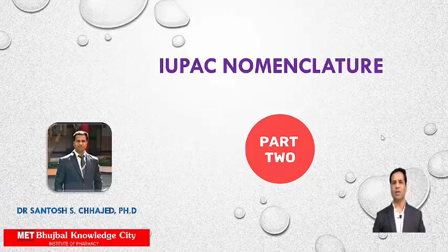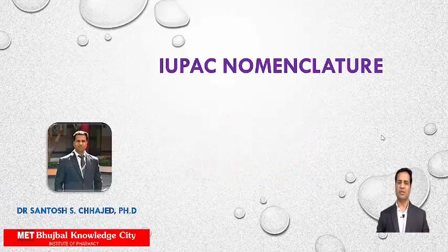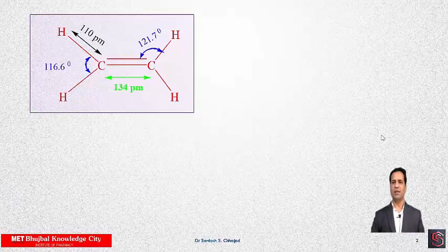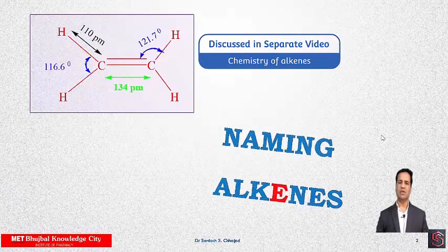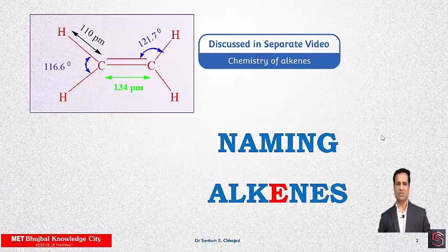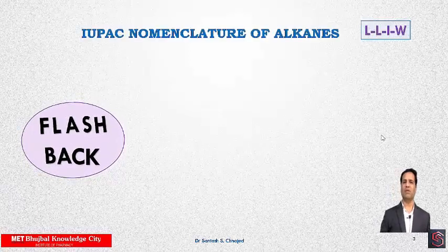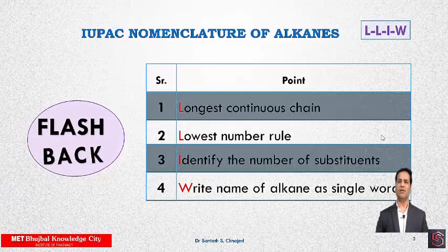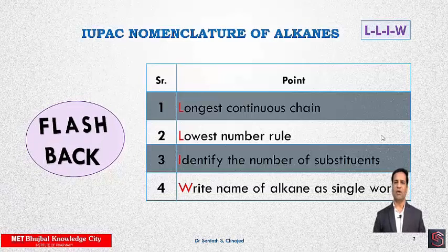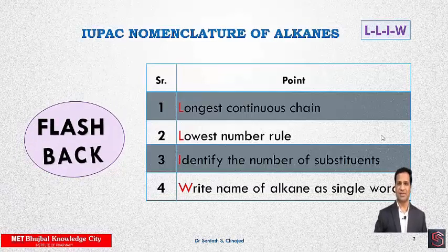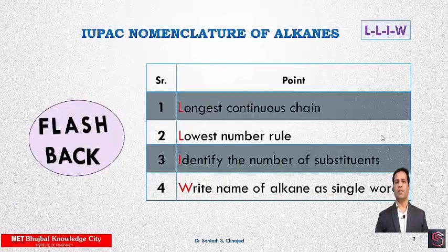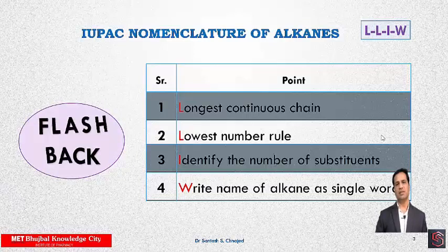Basically, this is the second video on IUPAC nomenclature. All the basic stuff — selecting the longest chain, naming the chain, numbering the chain, and selecting suffix and prefix — everything I described in my first video. So, naming alkenes: whatever detailed chemistry of alkenes is there, this video will not cover that in detail. As a flashback from the first video, I gave a trick — nomenclature shall be done using the abbreviation LLIW: longest continuous chain, lowest number rule, identify substituents and functional groups, and decide their location, then finally write the name of the alkane as a single word.